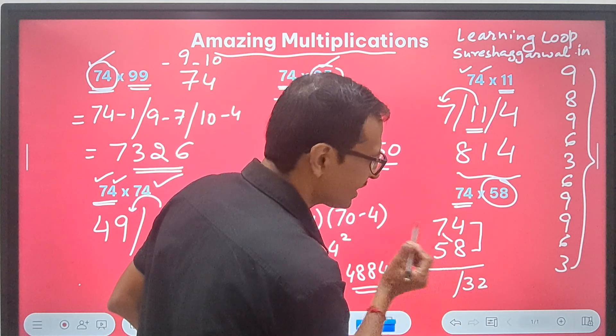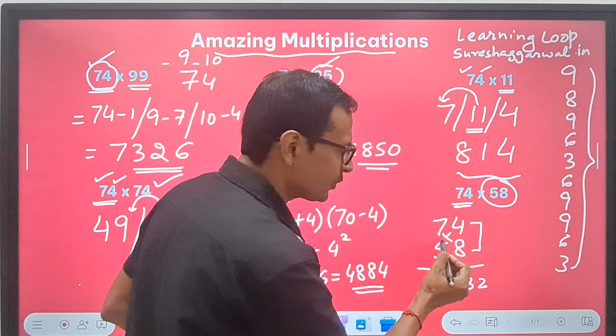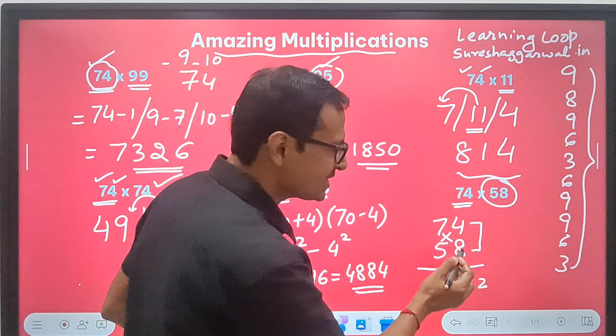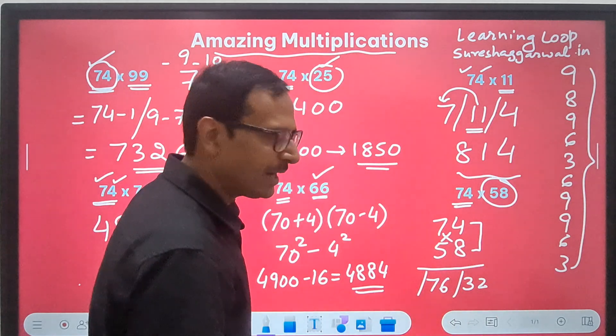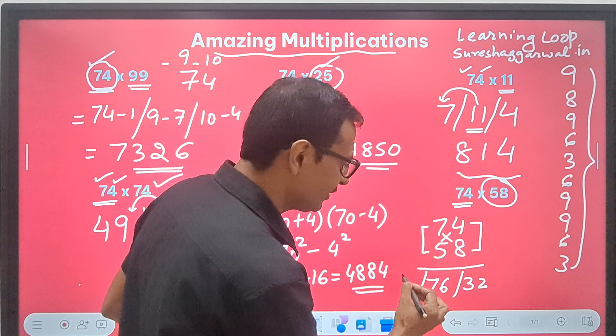Then, cross. 8 times 7 is 56. 5 times 4 is 20. 56 and 20 is 76. So, I will write here. And finally, 7 times 5 is 35.